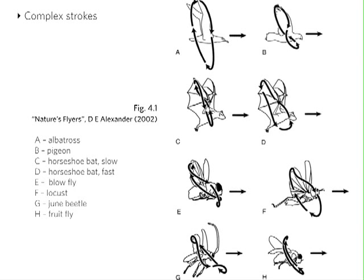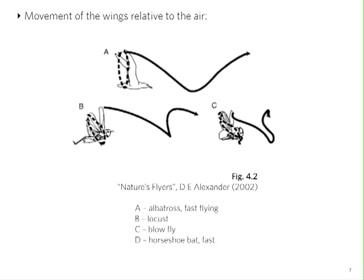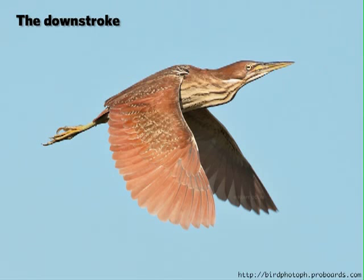Some insects have very complicated stroke patterns with loops, as shown in a picture from the book by Alexander. If we look at the motion of the wing tips not in a reference frame fixed with the bird, but one in which we see the bird fly by, then the tips of the wings trace more or less a wavy pattern in the air, also shown in a picture from Alexander.